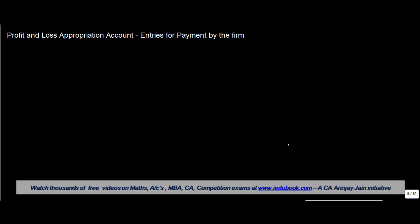In this video we will learn something about the profit and loss appropriation account — specifically what entries are made by the partnership firm in cases where there are certain payments or allocations made by them to the partner. So, entries for payment by the firm: when a firm makes a payment to a partner, this broadly falls under certain predefined categories.